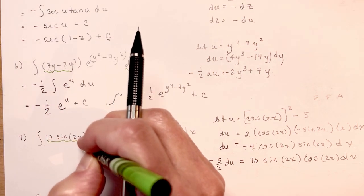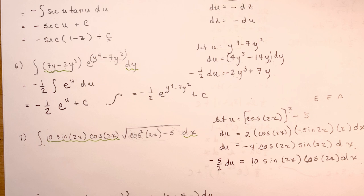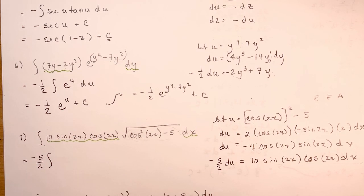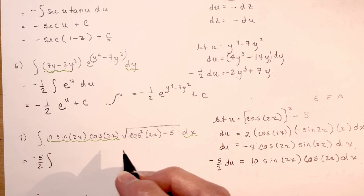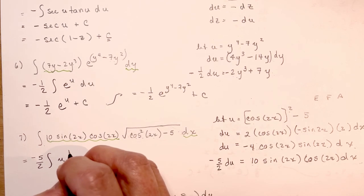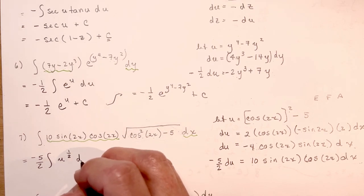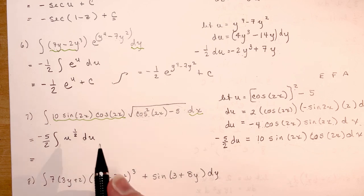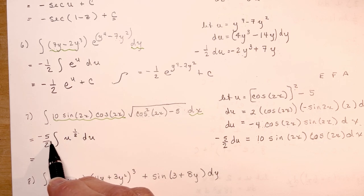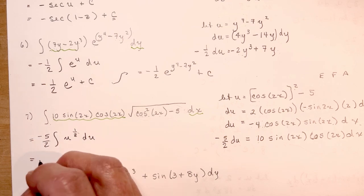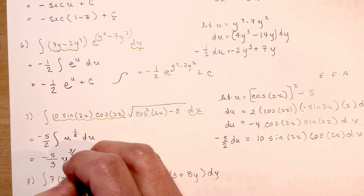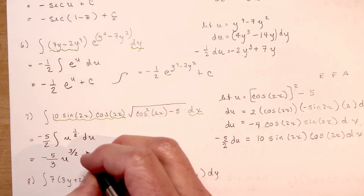So 10 sine 2x dx gets replaced by minus 5/2 du, and under the radical we have u. So the integral becomes minus 5/2 times the integral of u to the 1/2 du — since the square root is the 1/2 power. I add 1 to get 3/2, divide by 3/2 which is multiplying by 2/3. The 2s cancel, leaving minus 5/3 u to the 3/2, plus c.